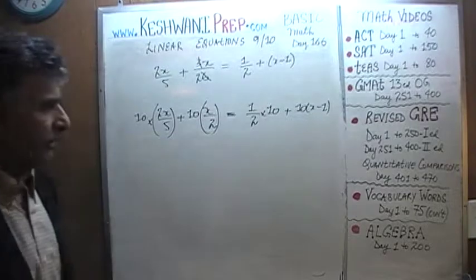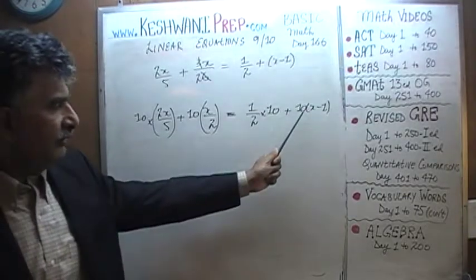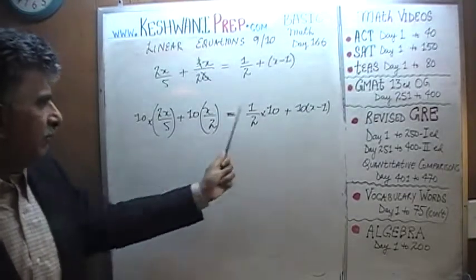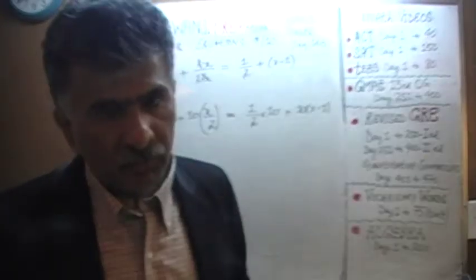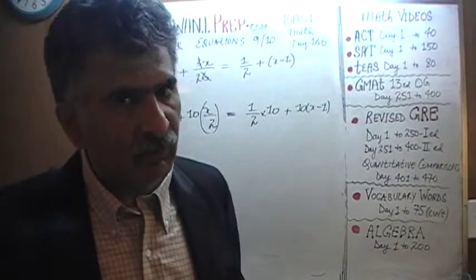As you can see we have multiplied the entire equation by 10 and since we are multiplying every single term by 10, we have not changed anything. It is the same equation being multiplied by 10 throughout. So both sides are still equal to each other.